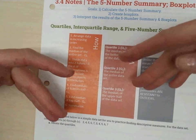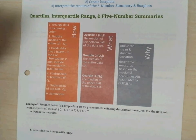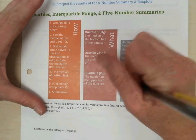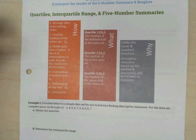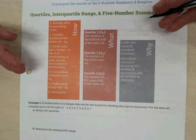Toby, can you read to us about the why? Unlike the mean and standard deviation, descriptive measures based on the median and percentiles are resistant to outliers. Great, thanks. So we just got done talking about the empirical rule. That was based on the mean, not resistant to outliers. So this comes in handy when you do have some outliers.